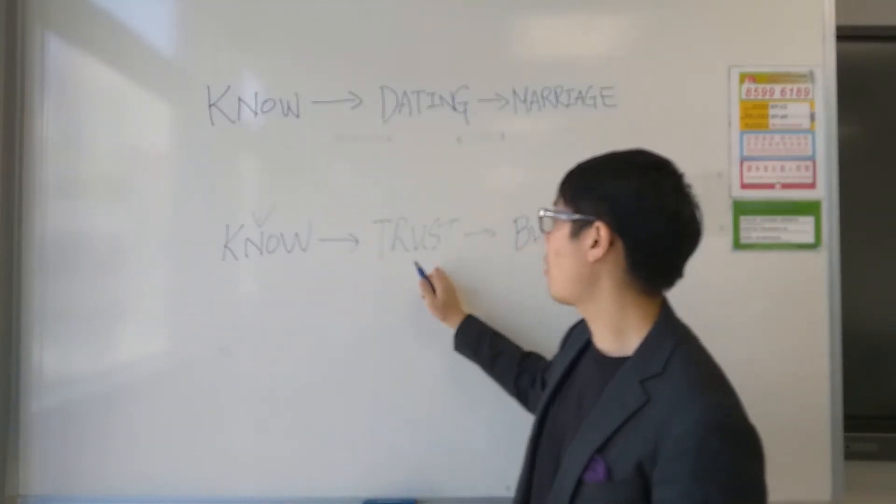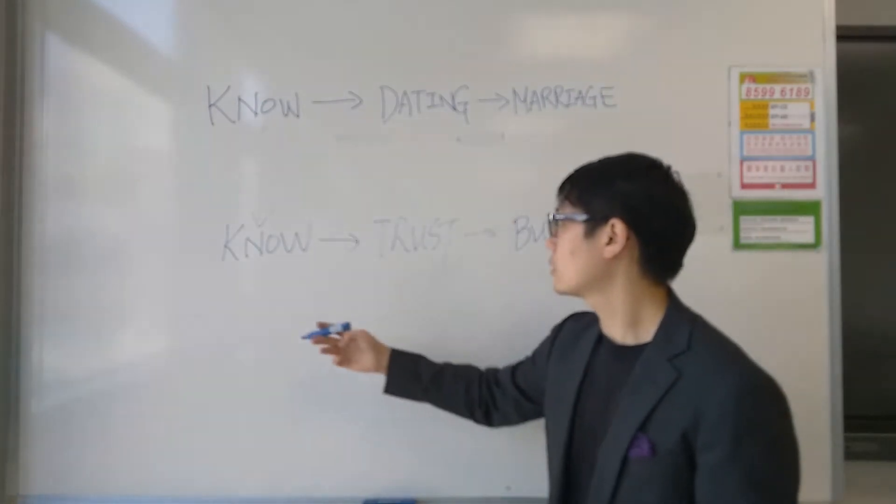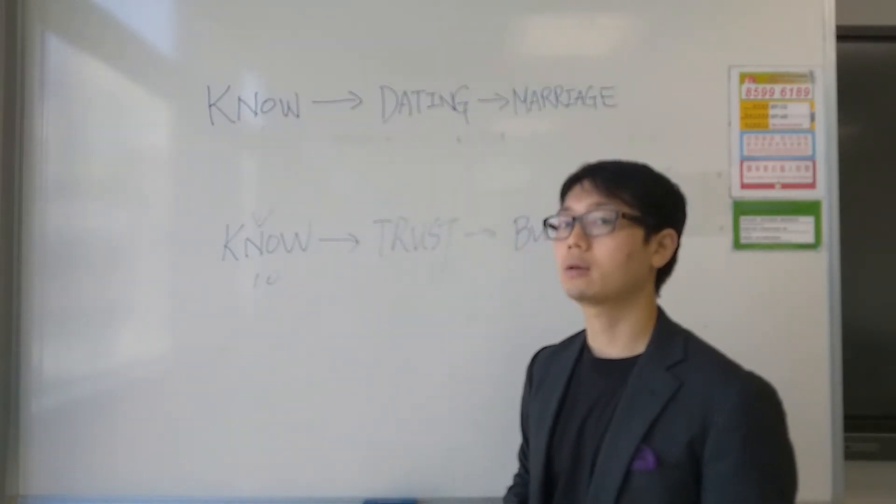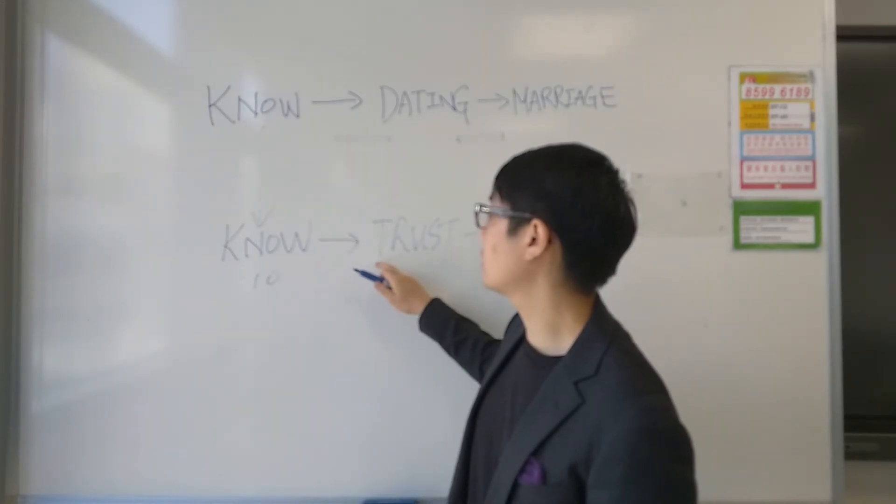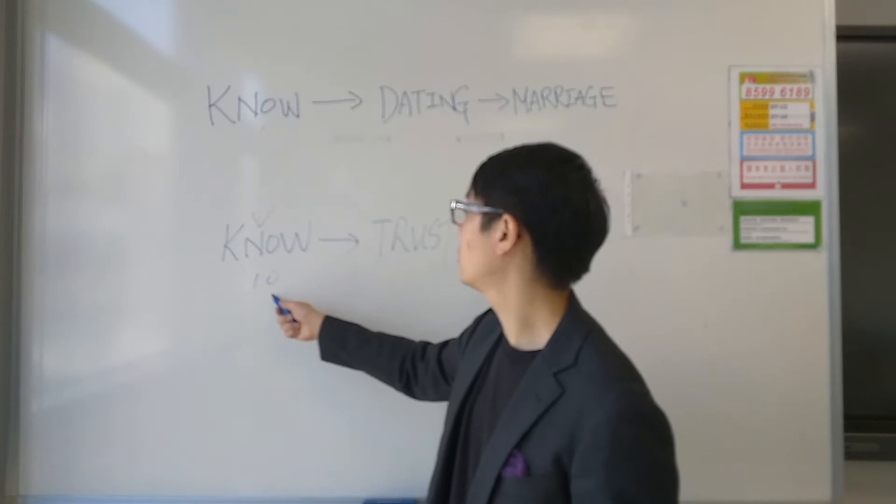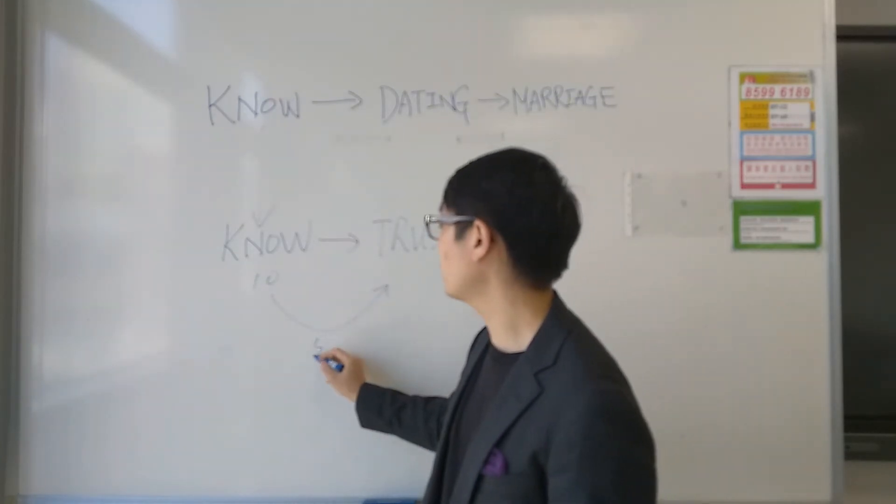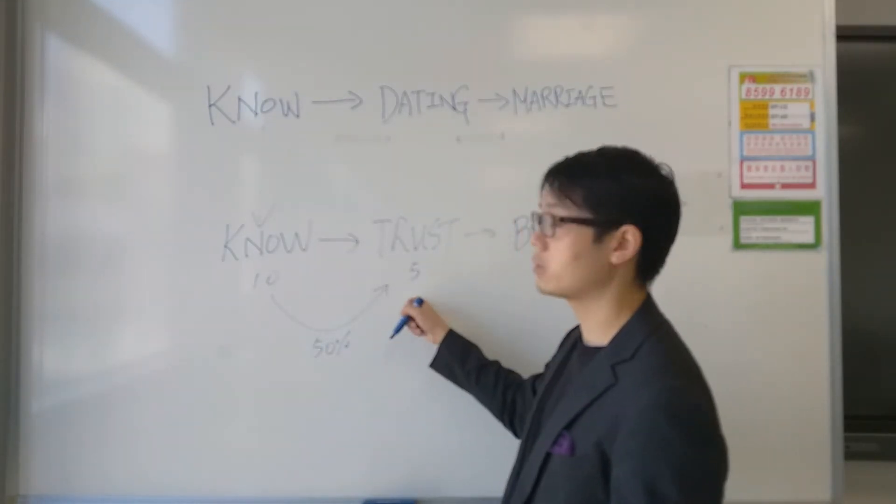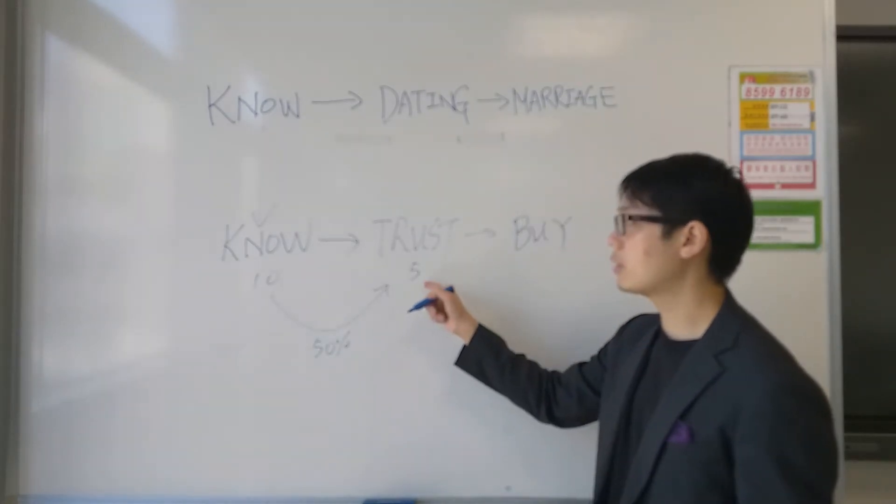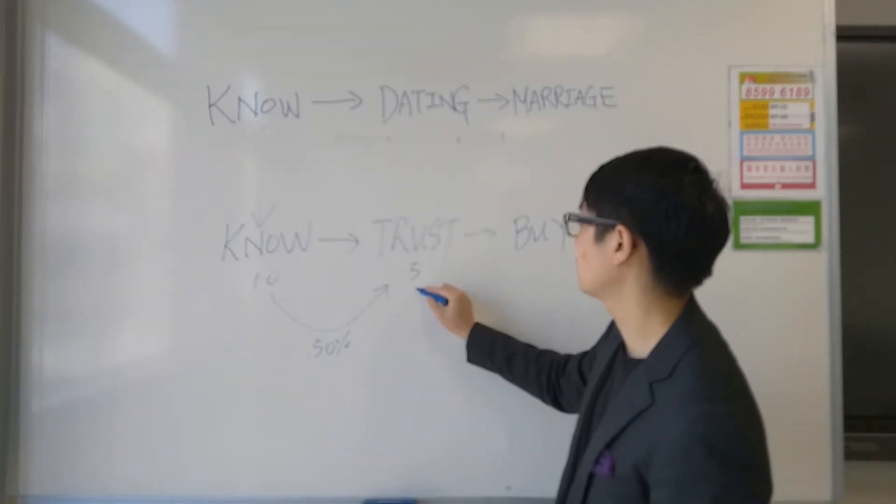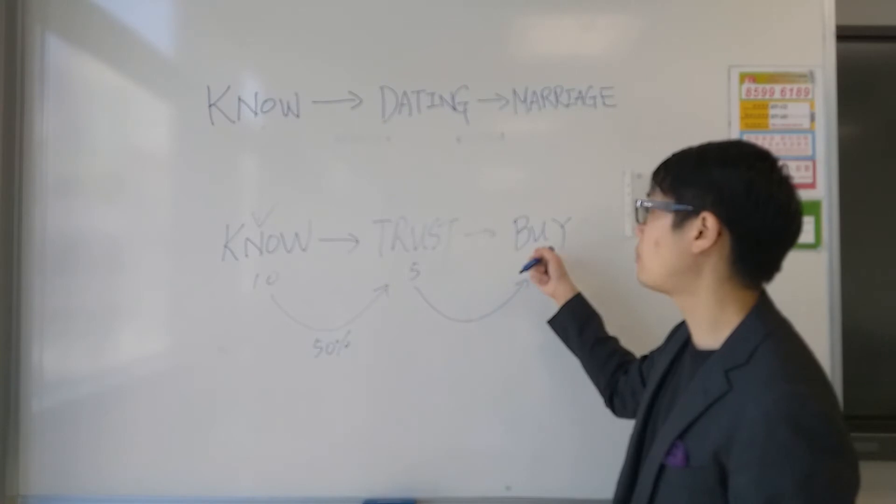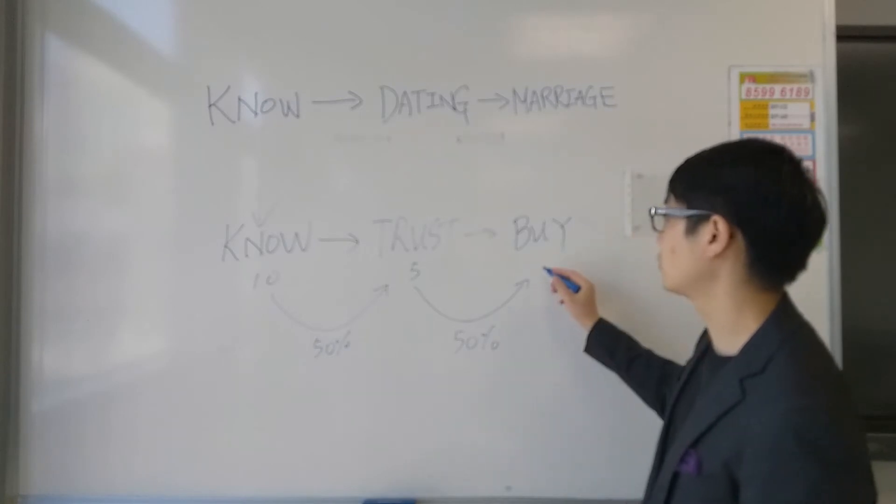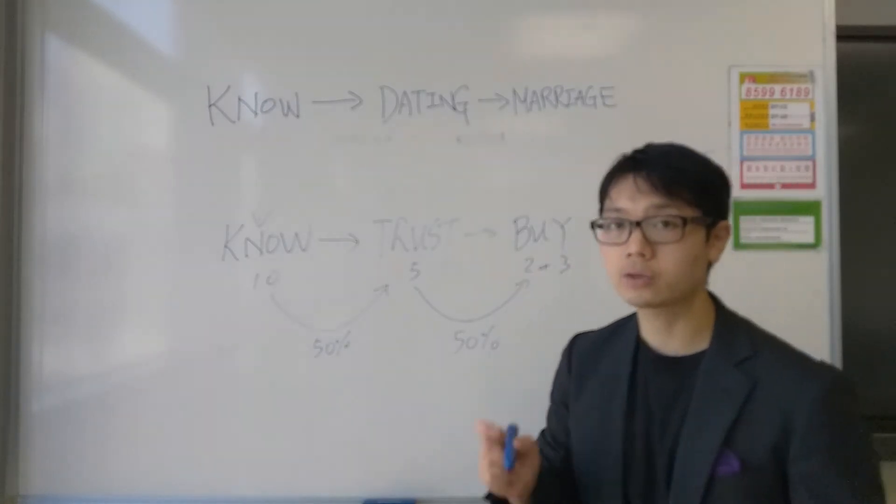And this whole process has one phenomenon. Assuming 10 people know about you at the beginning, 10 potential clients. Now once you get to the stage that some of them trust you, maybe the conversion rate is just about 50%, meaning that maybe at most, 5 people will start to trust you. And once you have 5 people who trust you, from trusting you to buying from you, maybe the conversion rate is another 50%, and maybe you have about 2 or 3 people that will eventually buy from you.